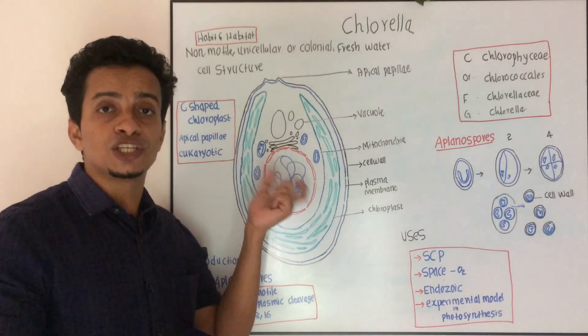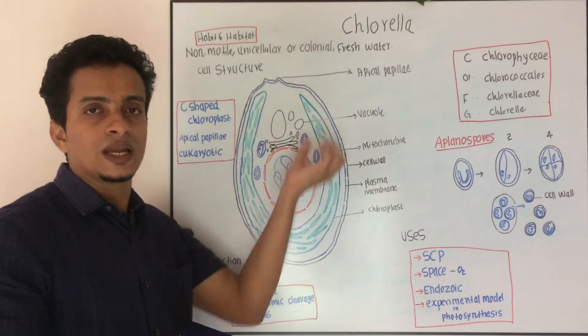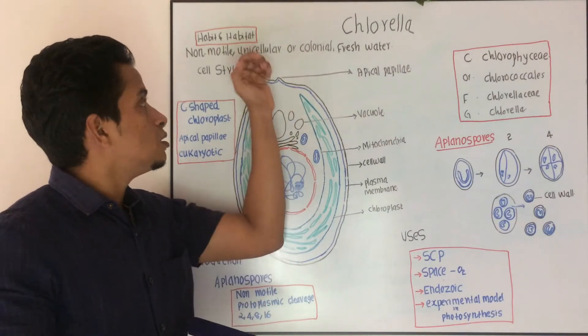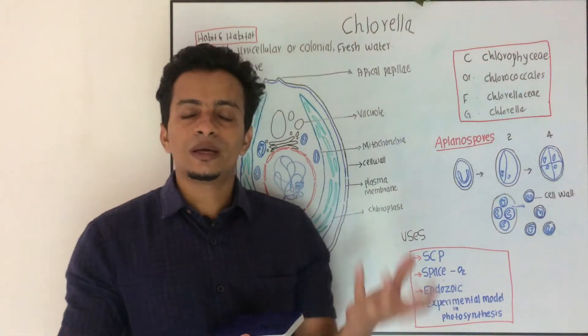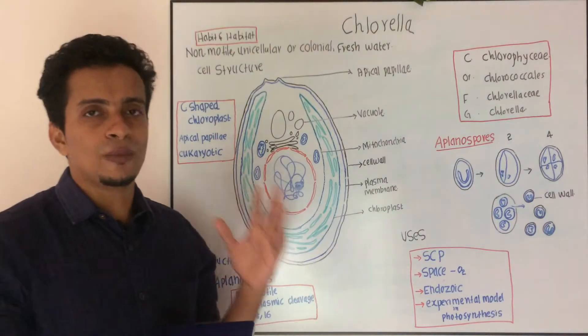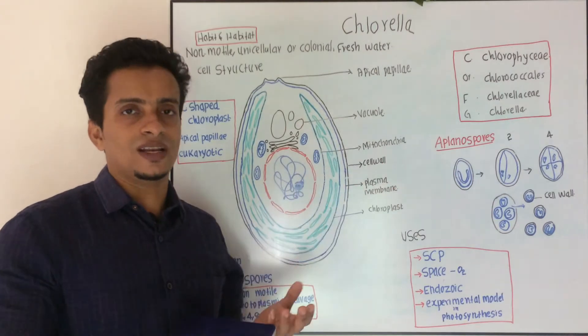Which are characteristic to eukaryote, can be seen in this cytoplasm of Chlorella. Because it is a typical eukaryotic member. The first one is a prokaryotic member, blue-green algae. That is a prokaryotic member.